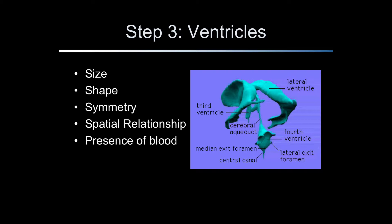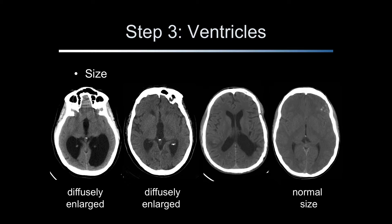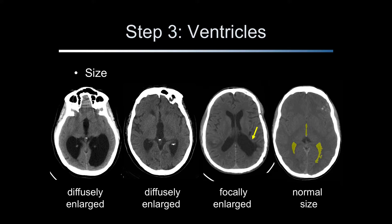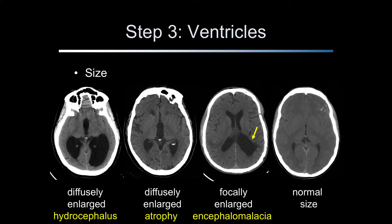Step 3 in the evaluation of the head CT scan is to examine the ventricles, which are cerebrospinal fluid spaces. Size, shape, symmetry, spatial relationship, and the presence of blood are features which require examination. Ventricular size may be enlarged diffusely or focally, as compared to normal-sized ventricles. Increased size is either due to loss of brain tissue from atrophy or encephalomalacia, or from increased amounts of cerebrospinal fluid from hydrocephalus. The encephalomalacia demonstrated by the arrow is due to a previous stroke.